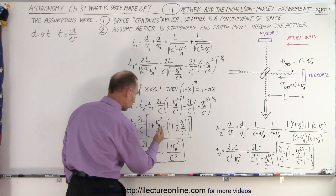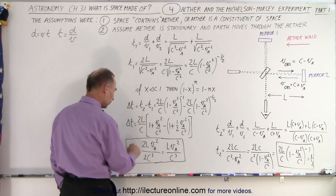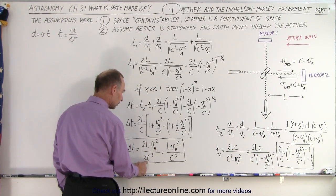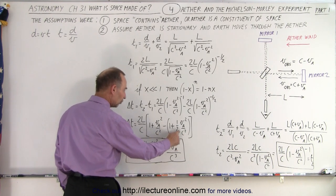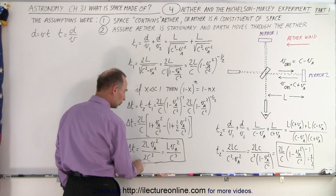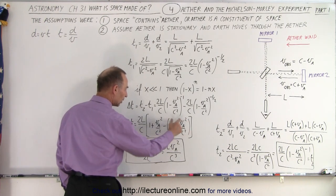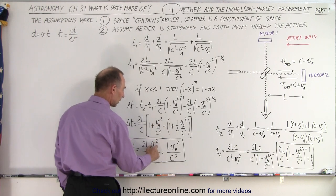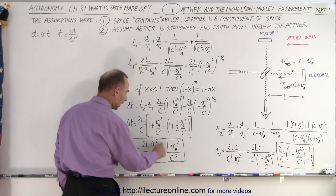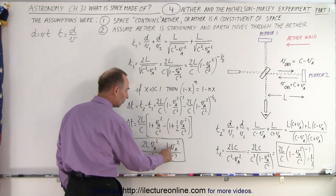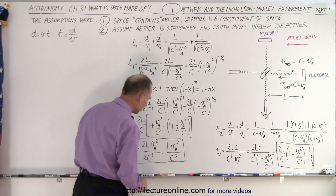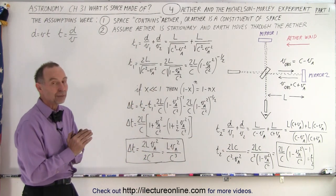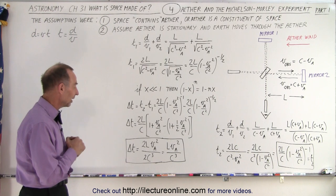So we have two L over C, then C squared factored out, and then one-half times V_A squared. Algebraically this reduces to L V_A squared over C cubed. That is the calculated difference in time — the time difference between the two light paths on the Michelson interferometer.